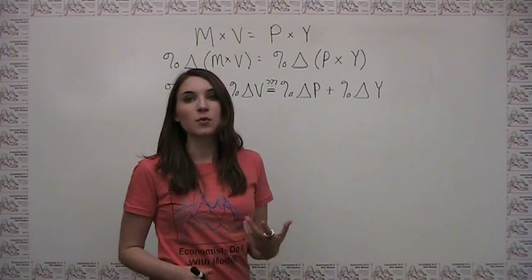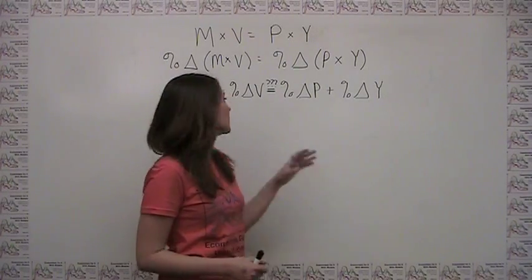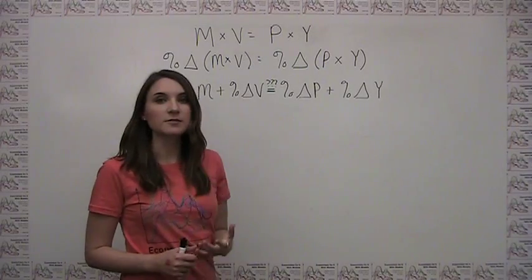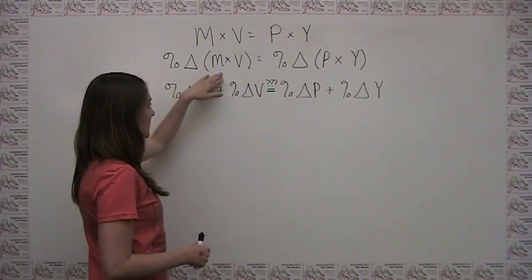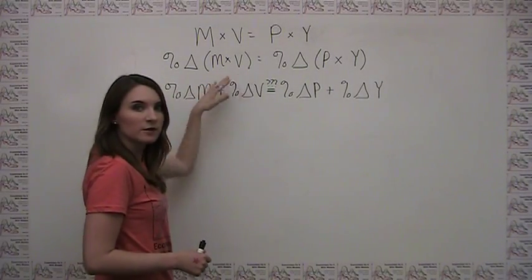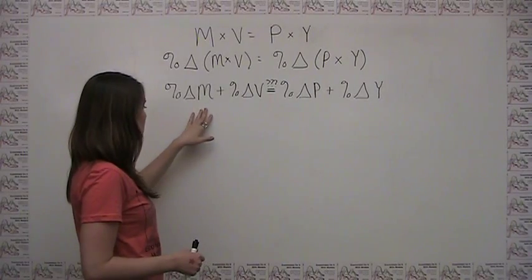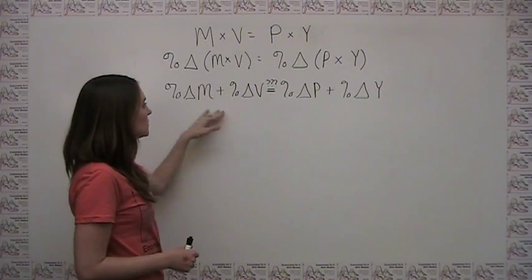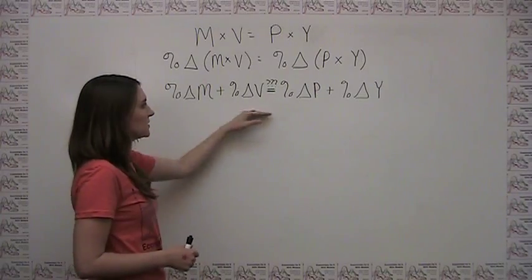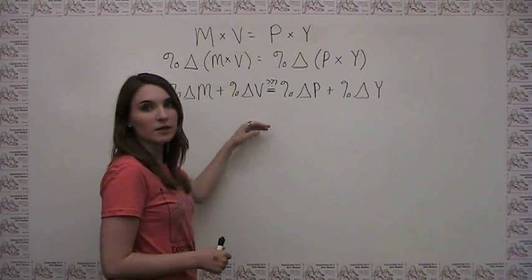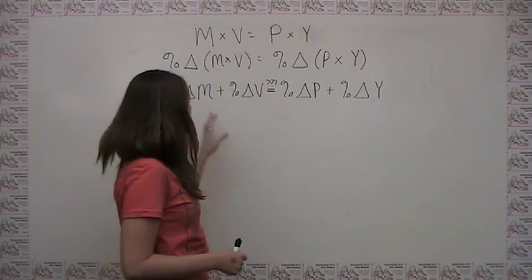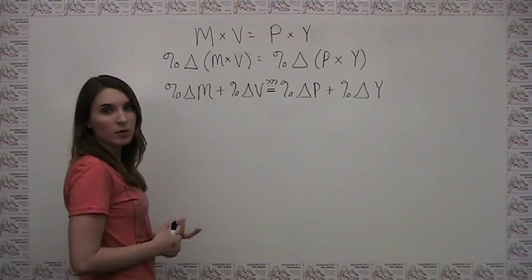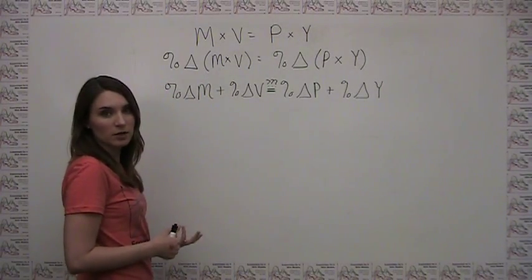The viewer goes on to point out that he plugged in numbers for M and V and doesn't find that the percent change in M times V is equal to the percent change in M plus the percent change in V. Let's go through an example and think about what's going on here, because as it turns out, this equality is only an approximation.